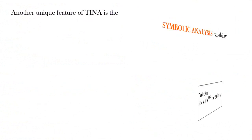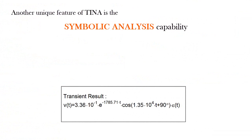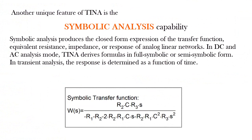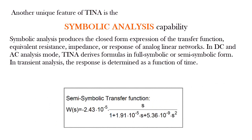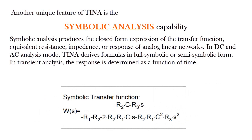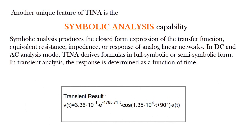Another unique feature of TINA is its symbolic analysis capability. Symbolic analysis produces the closed form expression of the transfer function, equivalent resistance, impedance, or response of analog linear networks. In DC and AC analysis mode, TINA derives formulas in full symbolic or semi-symbolic form. In transient analysis, the response is determined as a function of time.